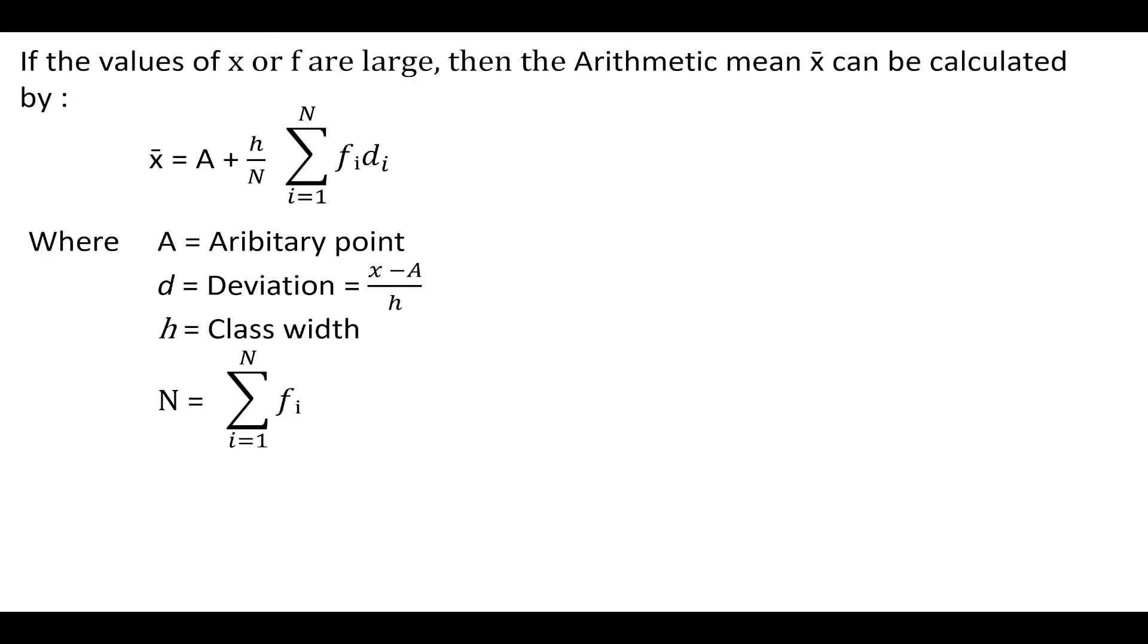If the values of x of frequency are large, then the arithmetic mean x bar is calculated using the formula x bar is equal to A plus h upon n into summation of fi di, where A is the arbitrary point. Most of the time the value of A is the value of x corresponding to the middle part of the distribution. d is the deviation given by x minus A upon h, where h is the class width.